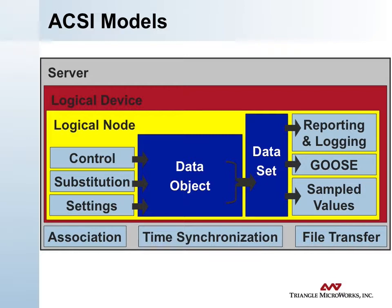Within each logical device there is a set of logical nodes. At the logical node level, you have control capabilities, substitution, and parameter settings, which operate on a set of data objects within the logical node. These data objects can be organized into data sets. Data sets can be arbitrary types and organization of data, but they define a group of data objects for the purposes of reporting and logging services, GOOSE (the generic object-oriented substation event), and sampled values.